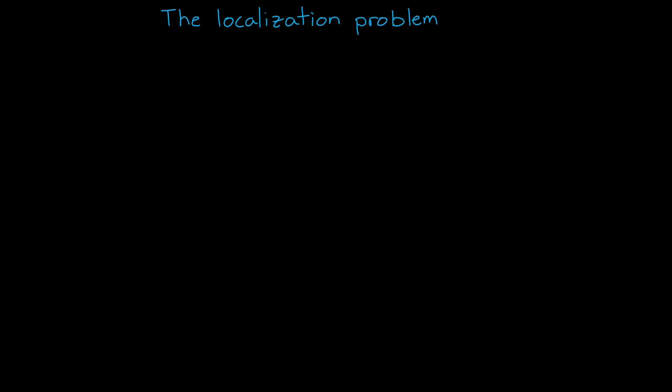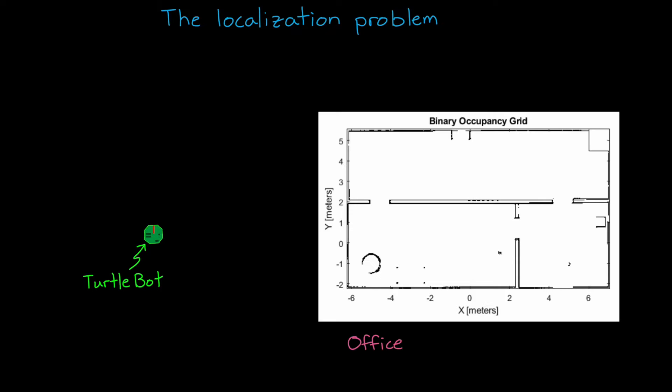Let's set up the localization problem. We have a robot, the TurtleBot, that's wandering around inside an office building. The robot is given a map of the building, so it knows the general layout of the walls and the furniture, but it doesn't know initially where it is within the map. It could be anywhere. Therefore, the problem is that the robot needs to use its sensors and motion models to estimate its pose—that is, determine its position and orientation within the building.